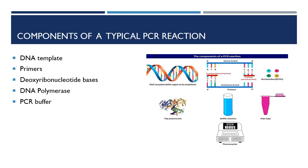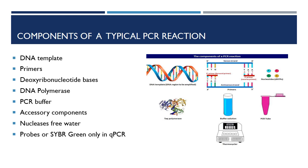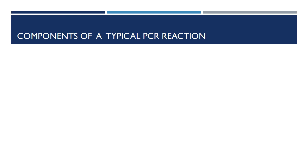Components of a typical PCR reaction include: target template, primers, nucleotide bases, enzyme polymerase, PCR buffer, accessory components, nuclease-free water, probes or SYBR green dye, and reverse transcriptase enzyme — only for RT-PCR. Now we will discuss all these components individually. First of all, DNA template.